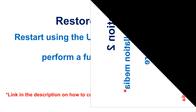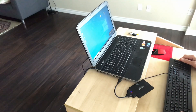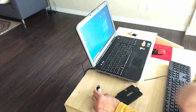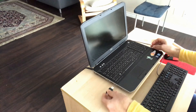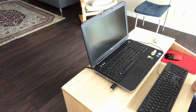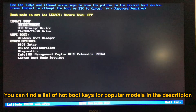That was option one. Restore option two is to restart using the USB installation media of Windows 10 and then perform a full image restore. If you don't have a USB installation media, check the link in the description on how to create one. First, remove the backup media from the PC and insert the Windows 10 installation key — if both are connected simultaneously, the PC will not restart from the USB key. With the PC shut down, turn it on and press the hotkey to access BIOS setup, then select USB storage device and hit Enter.